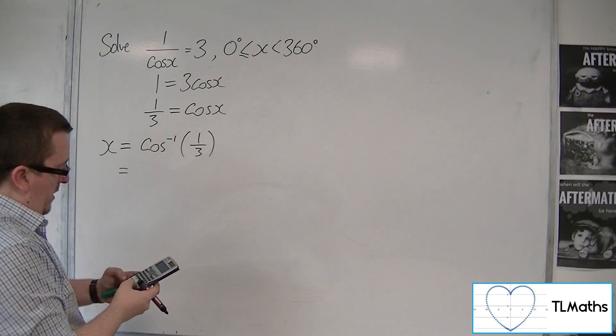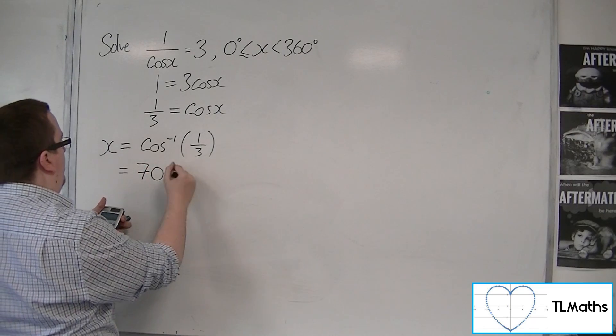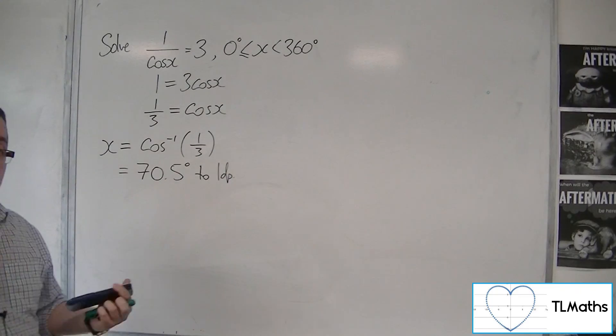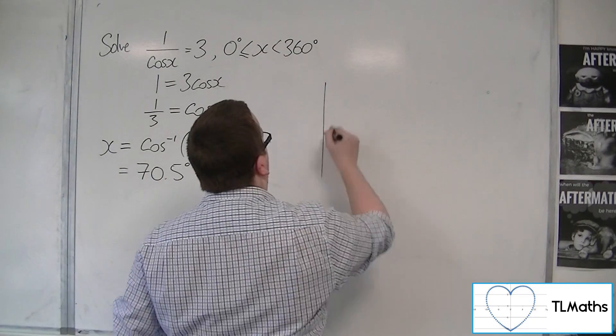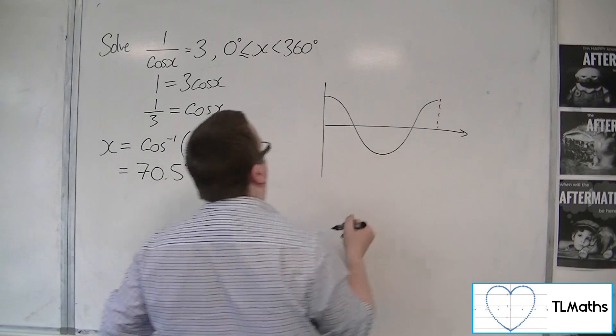So inverse cos of 1 third is 70.5 degrees to 1 decimal place. We then sketch cosine. There's my cosine curve.